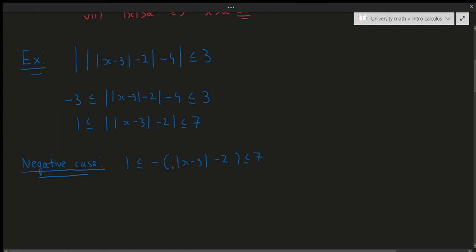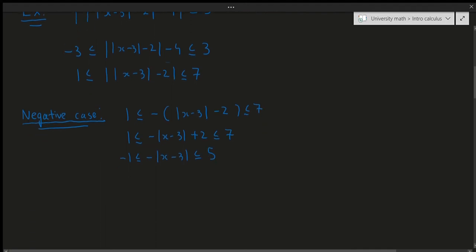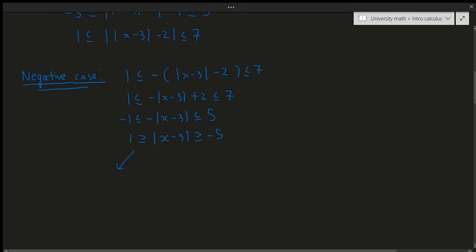So if I distribute the negative throughout this term, this will give us 1 is less than or equal to minus the absolute value of x minus 3, plus 2, which is less than or equal to 7. So now if I subtract 2 from both sides, we'll get negative 1 is less than or equal to minus the absolute value of x minus 3, which is less than or equal to 5. Now we can divide both sides by negative 1. Remember, if I divide both sides by a negative, the inequality is going to flip. So this is going to give us 1 is bigger than or equal to the absolute value of x minus 3, which is bigger than or equal to minus 5. Now let's work on these on a separate case-by-case basis. As long as we keep our work organized, it's not too bad.